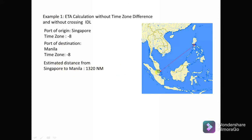The estimated distance from Singapore to Manila is 1,320 nautical miles — though this is only an estimate, since the actual route usually requires going a bit further north to avoid oil fields in the area. Speed is 13 knots. For ETA calculations, you should ask your captain what speed to use.